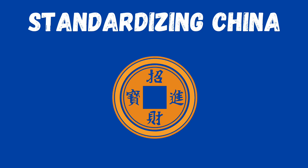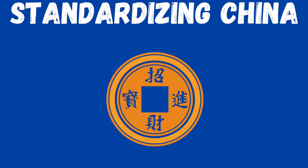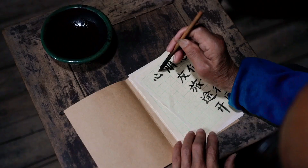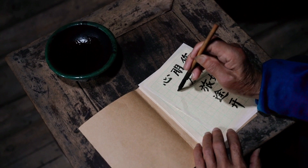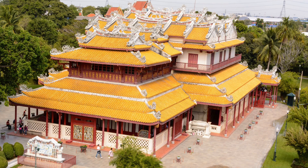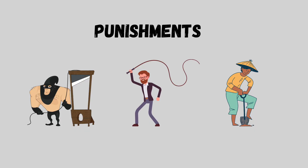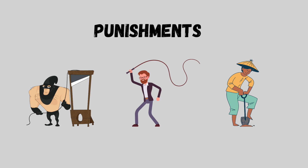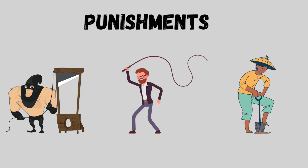Topic number two is how the first emperor standardized China. The emperor standardized the Chinese legal system, its currency, its system of weights and measures, and its writing system. In the legal realm, he punished builders if structures collapsed, and he forbade widows from remarrying. In addition to fines for the rich and the poor, officials would punish offenders with forced labor, whippings, or even beheadings.